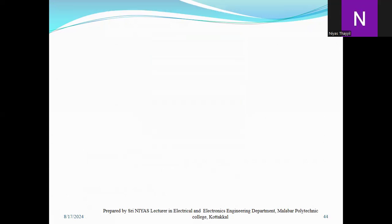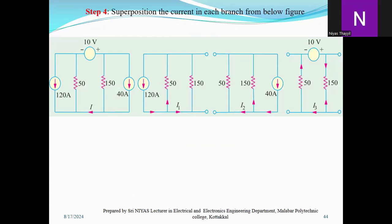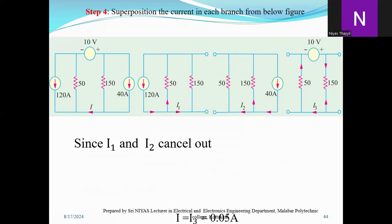Here we can find by superposition. The currents i1 and i2 are in opposite directions. The current is the value of the two — I can cancel the value of 30A or 30A. It's not I3; it's 0.5.